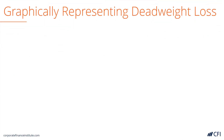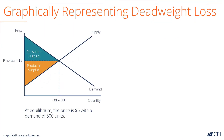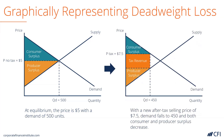Here we have a visual example of deadweight loss. At equilibrium, the price is $5 with a quantity demanded of 500 units. Then, the government introduces a tax on the product, increasing the after-tax selling price to $7.50. Quantity demanded falls to 450 units, and both consumer and producer surplus decrease as a result of taxation.